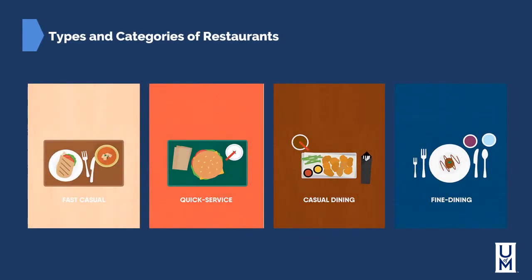There are four types of categories of restaurants: fast casual, quick service, casual dining, and fine dining. Let's take a look at each one.